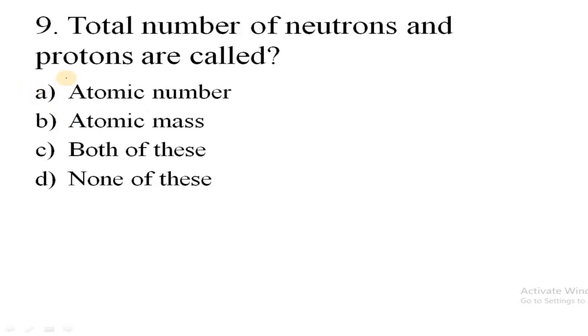Total number of neutrons and protons are called? Means if we sum up the number of neutrons and protons in the nucleus of an atom, what is it called? Here the correct answer is atomic mass.